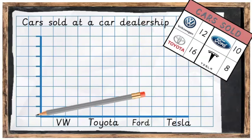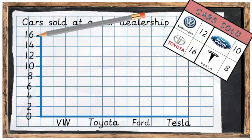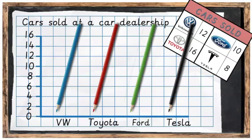We then put the frequency down the side, which was the amount of each car sold. Small lines were used to separate out the amounts, with 0 down the bottom, then skip counting in 2s, putting all the numbers in up to 16, which was the largest number we needed. From there the bar chart was filled in using the data from the car dealership.